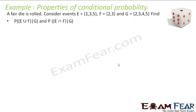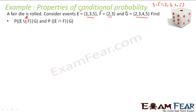Example one is a direct application of the formula. A fair die is rolled. We have events: E = {1, 3, 5}, F = {2, 3}, and G = {2, 3, 4, 5}. You throw a die and get one, two, three, four, five, or six — this is the sample space. Out of these we capture three events. We have to find the probability of E∪F given G, and the probability of E∩F given G.